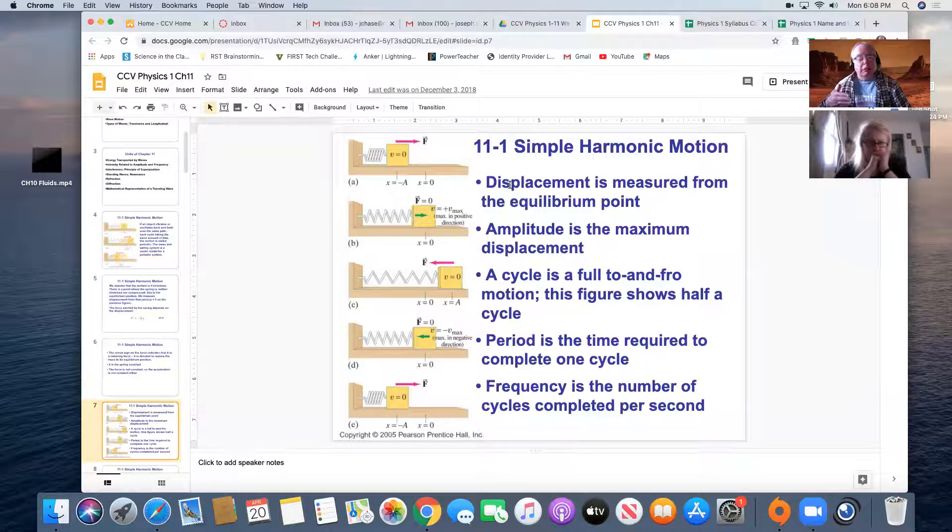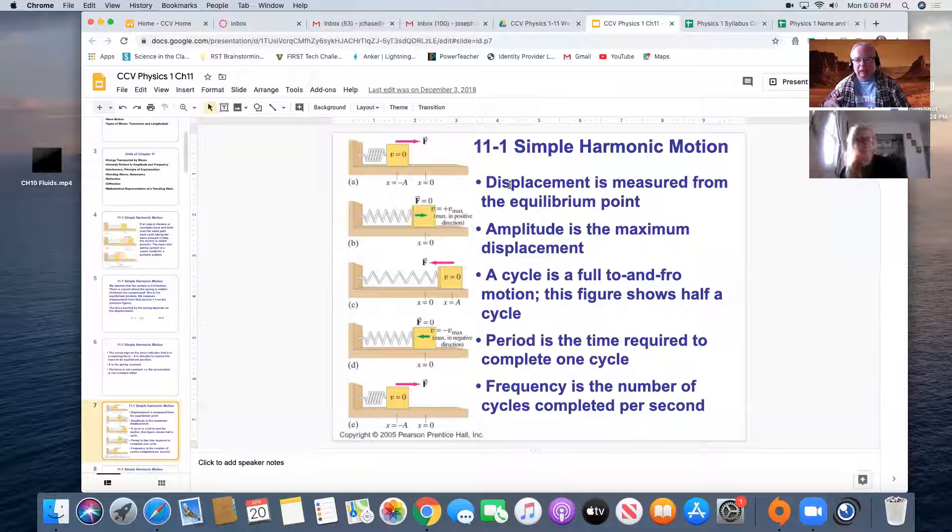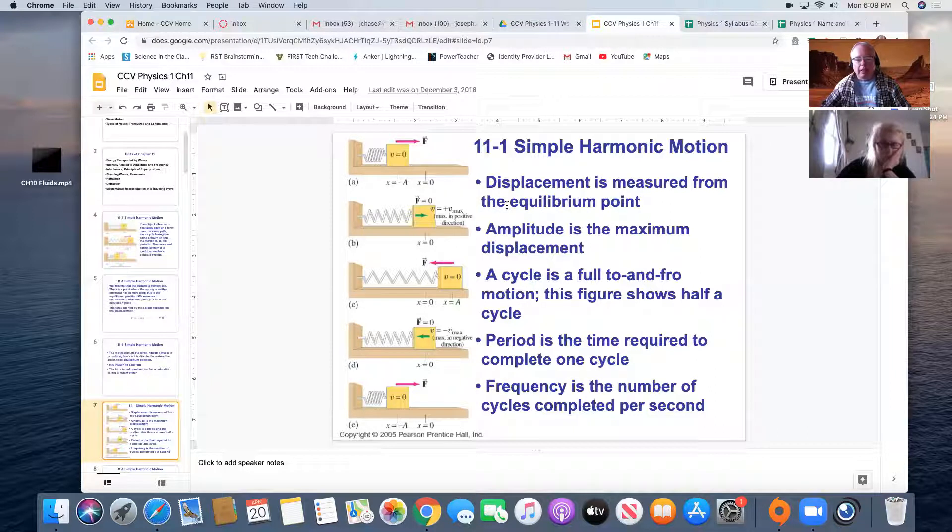Displacement is just the same thing that it was when we defined displacement in the beginning of the semester, measured from some equilibrium point or reference point. Amplitude is the max displacement. A complete cycle back and forth, the time for that is called a period. But if we have something that moves much faster, then usually we'll use the term frequency. Period is the time. Frequency is how often. And those are inverses of each other.